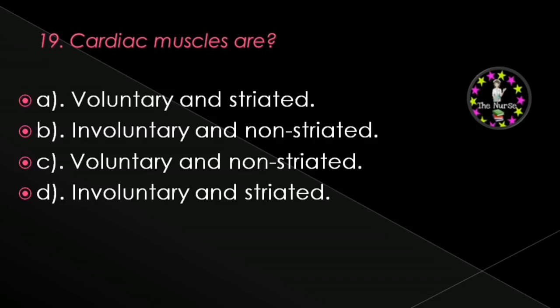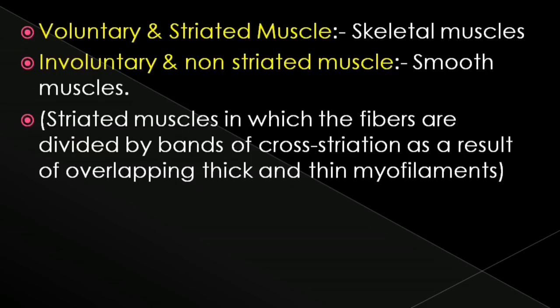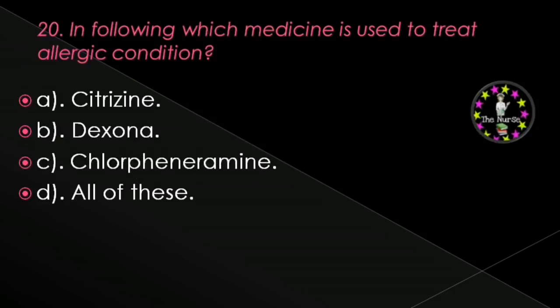Next question: Cardiac muscles are — voluntary and striated, involuntary and non-striated, voluntary and non-striated, or involuntary and striated? Correct answer is involuntary and striated. Voluntary and striated muscles include skeletal muscles. Involuntary and non-striated muscles include smooth muscles. Striated muscles are those in which the fibers are divided into bands of cross-striation as a result of overlapping thick and thin myofilaments.